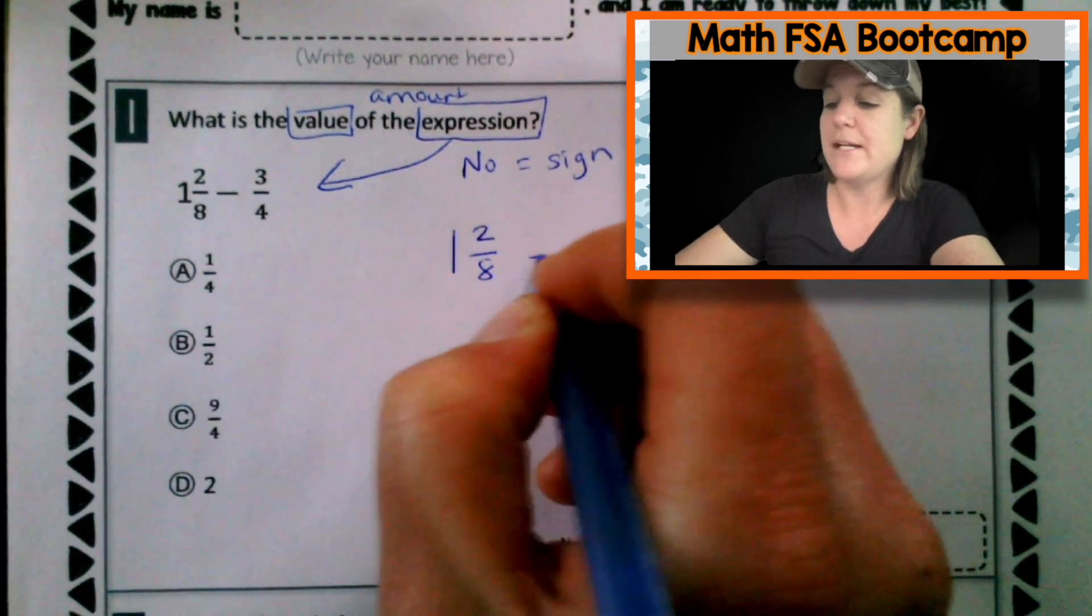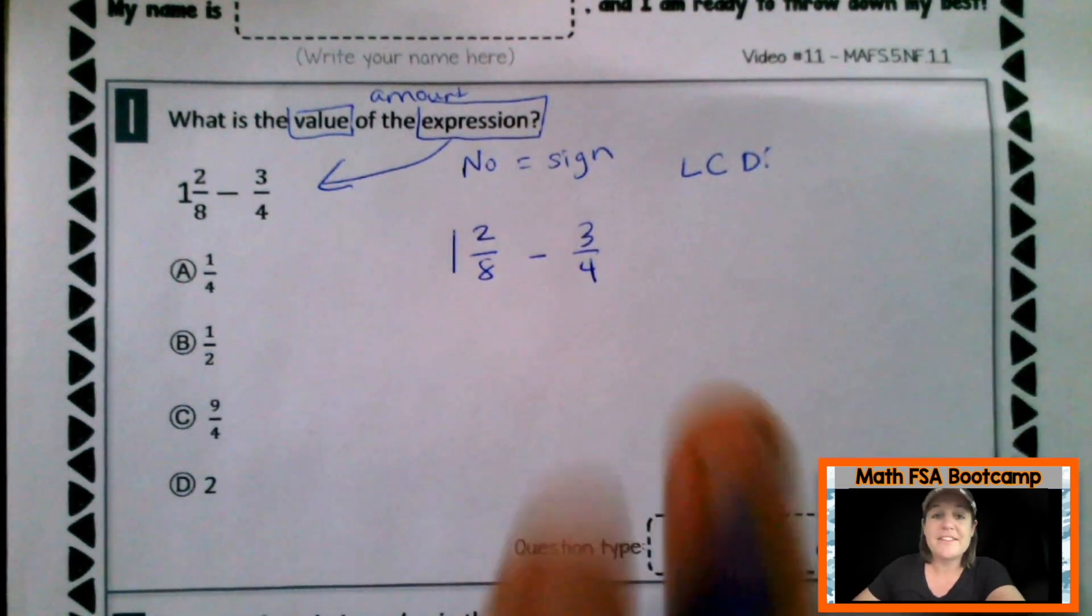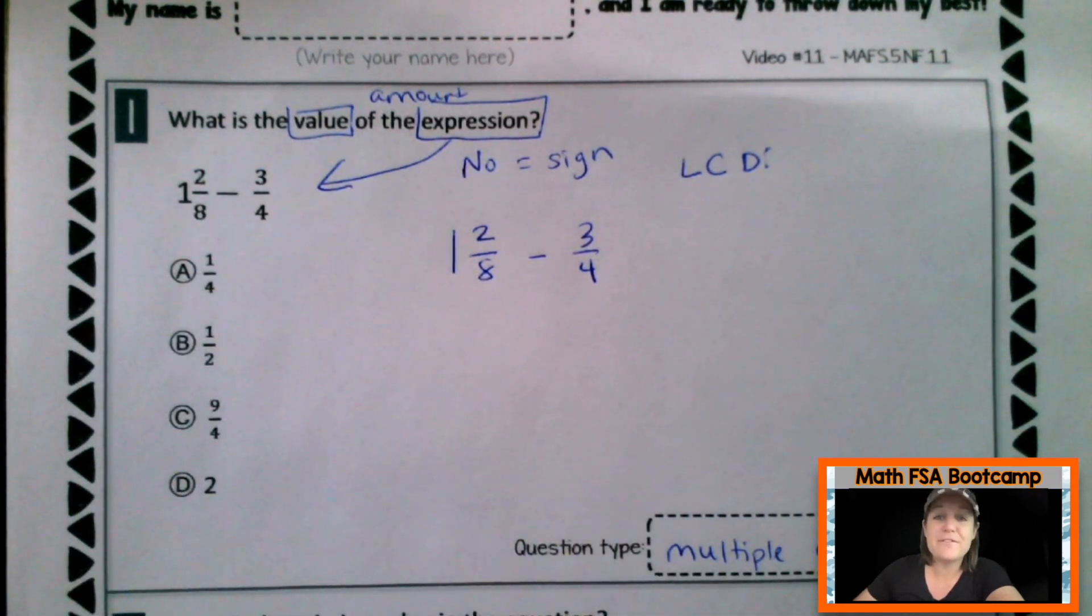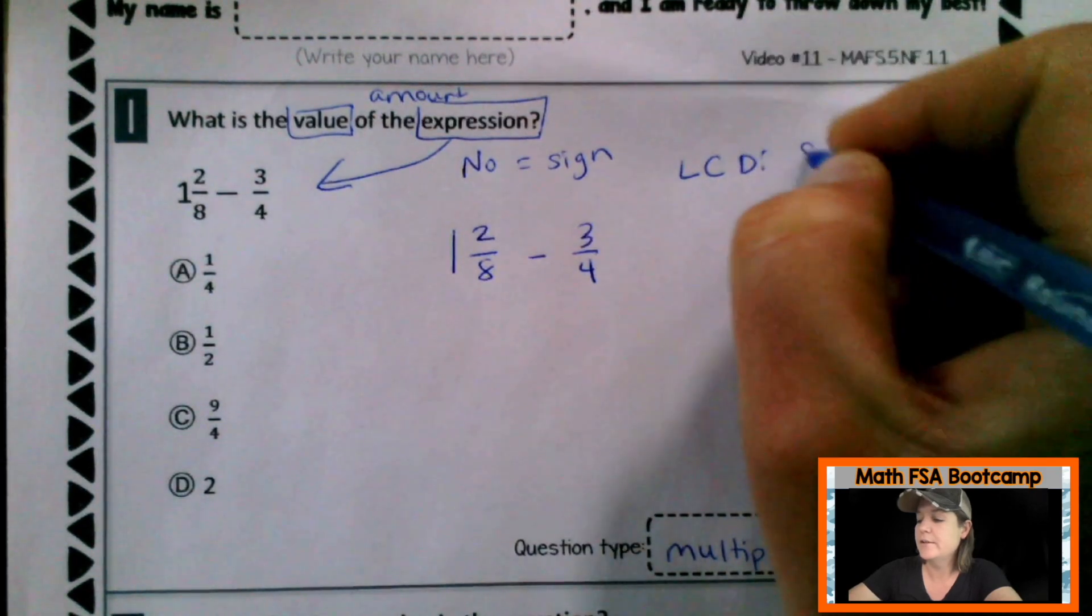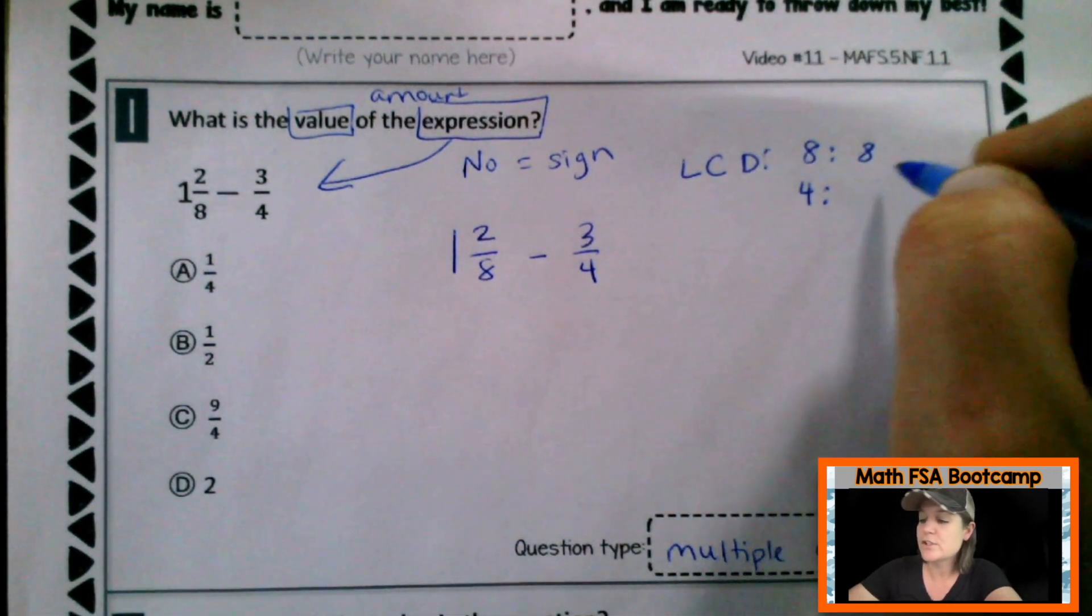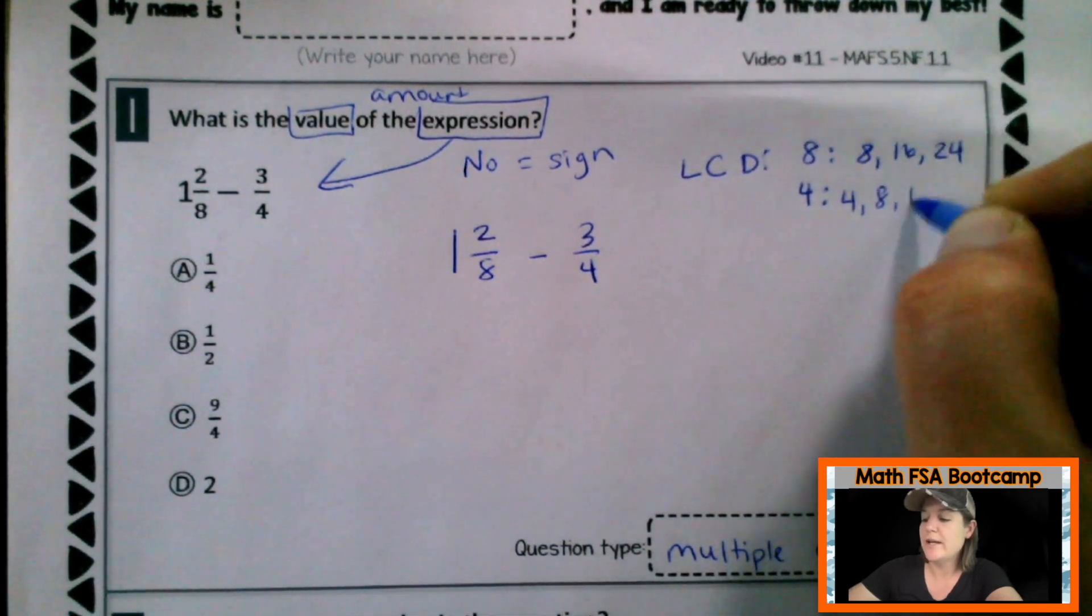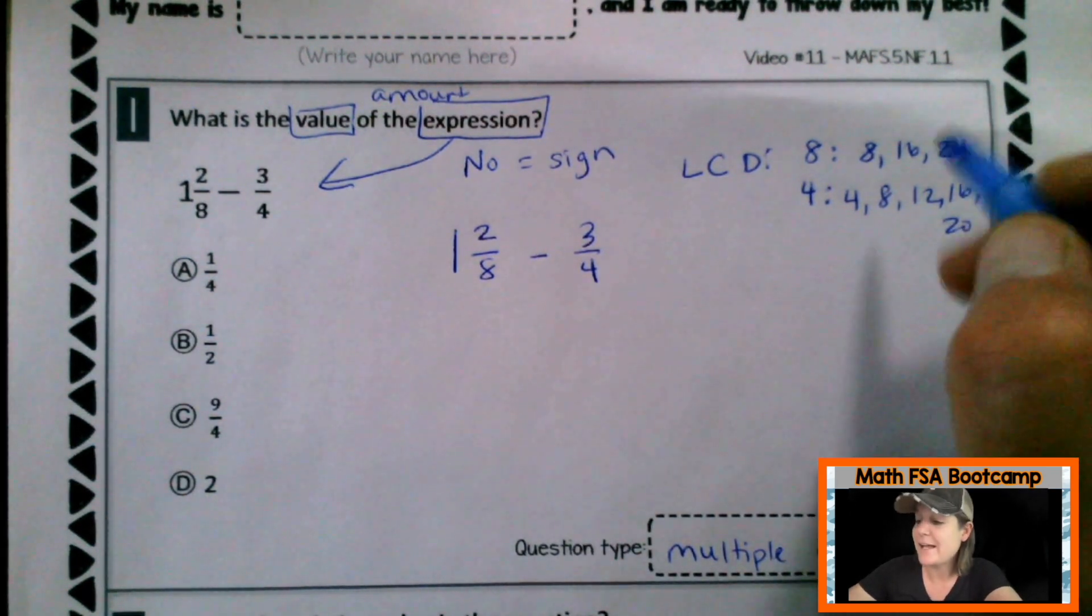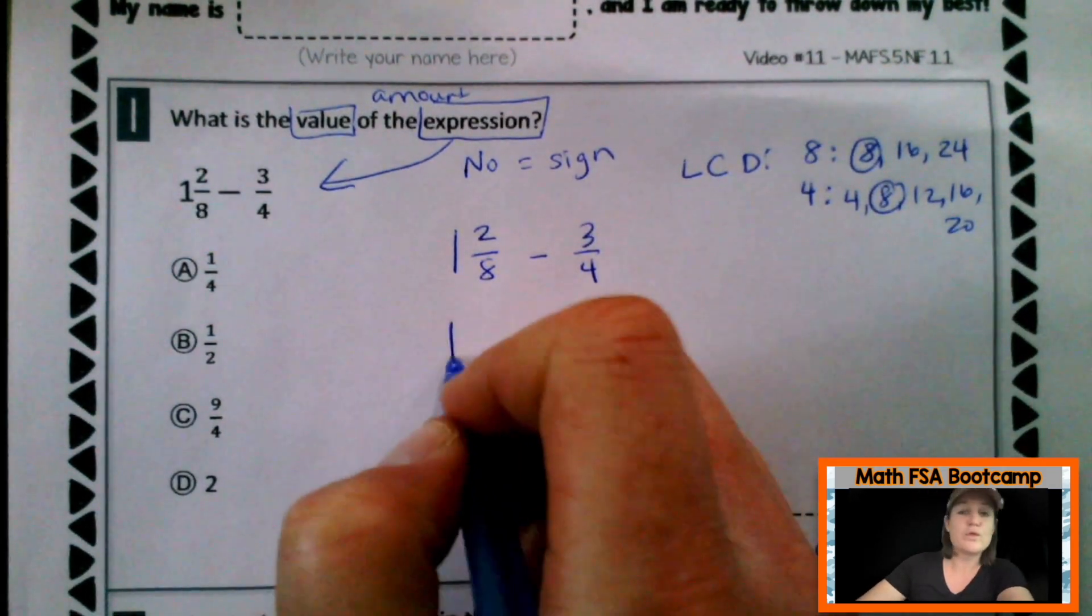So I'm going to take 1 and 2/8 minus 3/4 and find the least common denominator. Now remember that this is an FSA prep, but if you need help with adding or subtracting fractions, I definitely want you to check out McCarthy Math 155. I will send you in the right direction at the end of this lesson. So I'm going to take my two denominators, 8 and 4, and I'm going to count by eights and count by fours until I get a match. For 8: 8, 16, 24. And for 4: 4, 8, 12, 16, 20. I already see a match. The very first number that matches, the least common denominator, is 8.